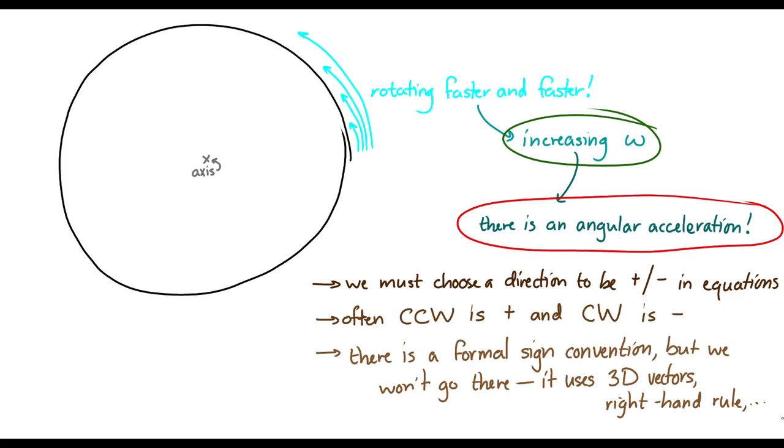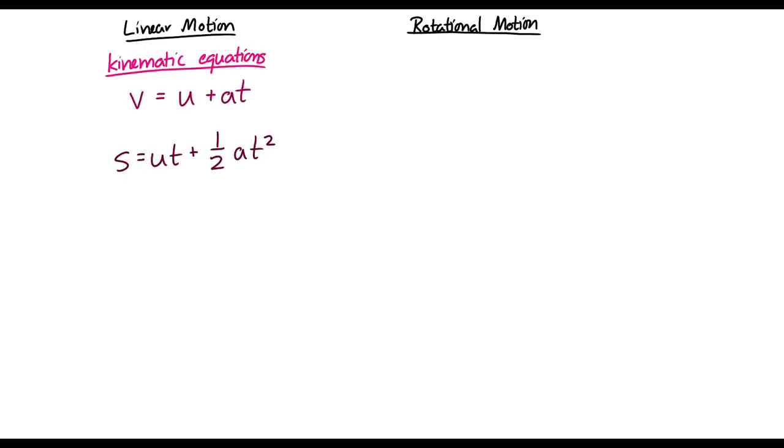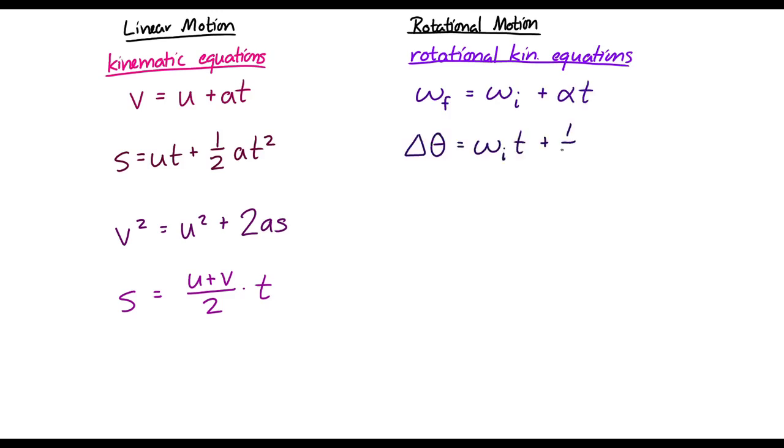So there are a lot of parallels between rotational motion and linear motion. And in fact, when we used linear motion, we made a lot of use of things called the kinematic equations. I'll write them down here. Turns out that for every kinematic equation, there is an analogous rotational motion equation. So all we do is we replace all the velocities with angular velocities and the accelerations with angular accelerations and the displacement with angular displacement.